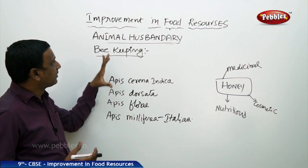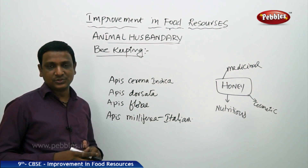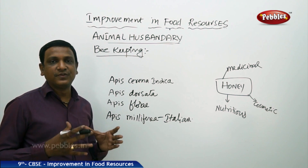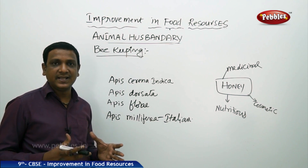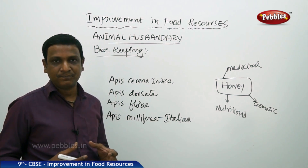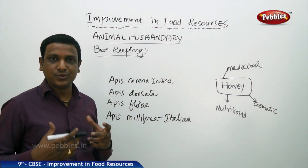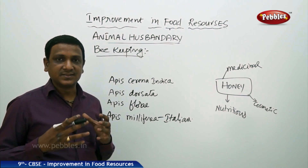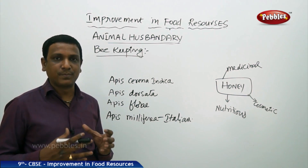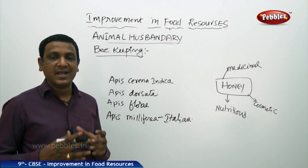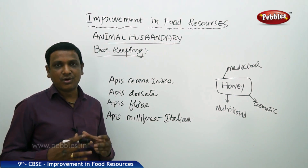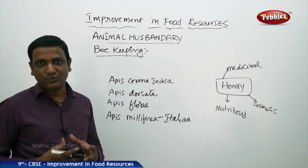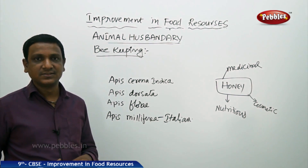Honey is an important product of animal husbandry and a key food resource. In this lesson, we have seen all the different practices by which the production of food resources — both plant and animal — can be improved. Day by day, the demand for food resources is growing, and production must also be improved without causing harm to the environment. We need sustainable management practices to improve food resources at low cost, so that even people with low income can afford food and malnutrition can be controlled.